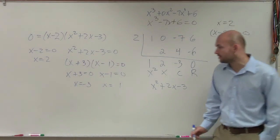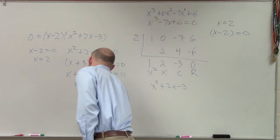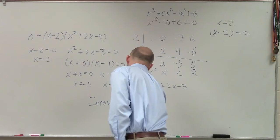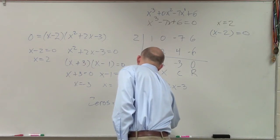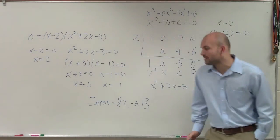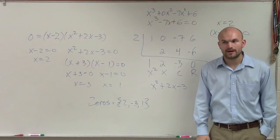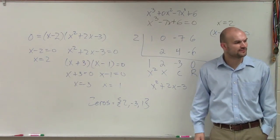So therefore, all of the zeros, you can either just write them all together or you can write them as one solution set. So the zeros of this polynomial are 2, negative 3, and 1. That should have been your answer for that problem.